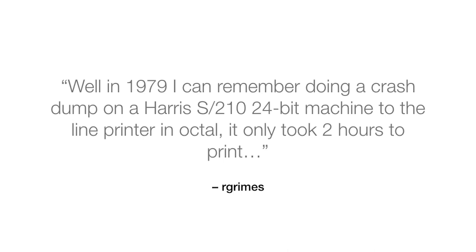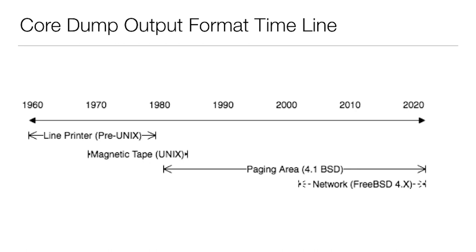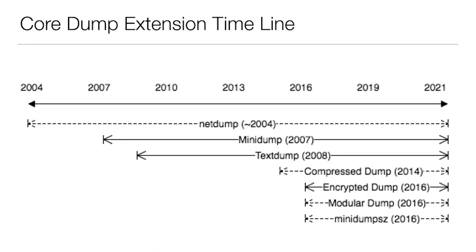One of my favorite quotes: when I was talking to Rod for help, he said, 'In 1979, I can remember doing a crash dump on a Harris S210 24-bit machine to the line printer in octal, and it only took two hours to print.' This talk ends up being largely about the output format of core dumps. Originally you just used a line printer, then later magnetic tape when Unix came around. After that came paging area or swap, then net dumping — though that never made it to base.